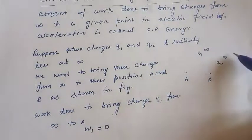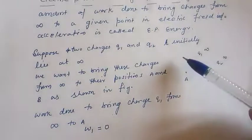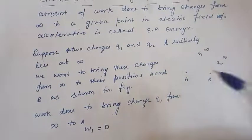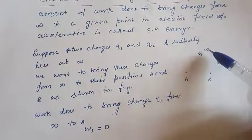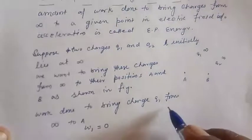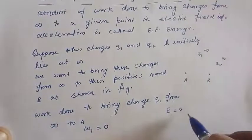Charge q2 is at infinity. So there is no field at point a or around a. So there is no work done to bring charge q1 from infinity to point a, because electric potential as well as electric field is 0.